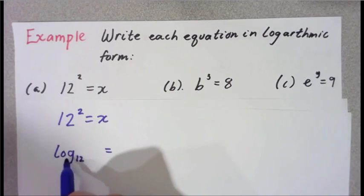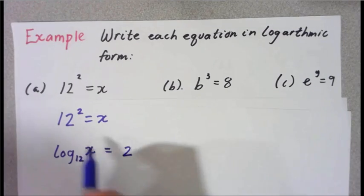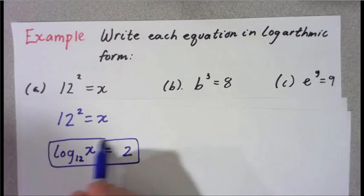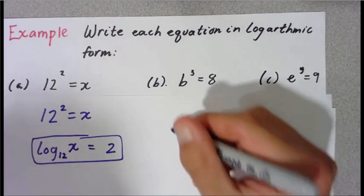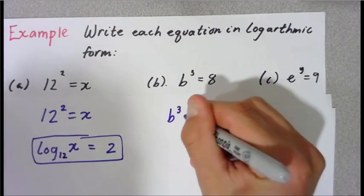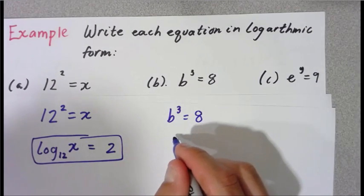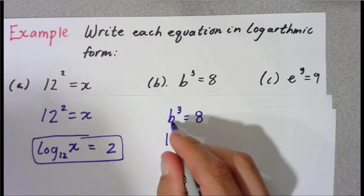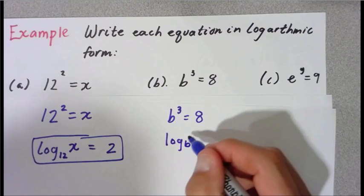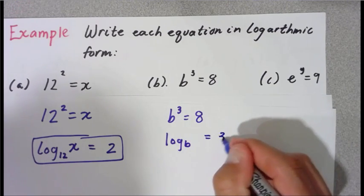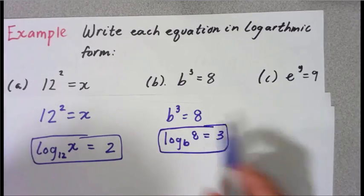Remember the logarithm is always equal to the power, which is squared, and then x goes here. So there's the inverse — this is the inverse of that exponential. Let's go on to part b: b cubed equals 8. The base is matching the exponent, so it's log base b. The logarithm is always equal to the power, so I'm going to put 3, and then 8 goes here. There's the inverse of b cubed equals 8.